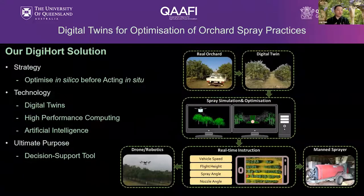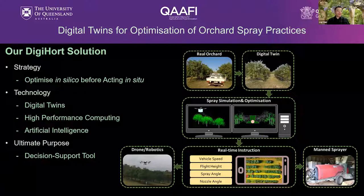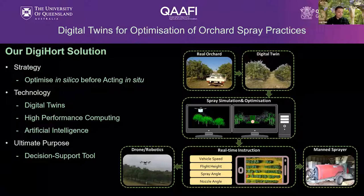In this research, our digital horticulture solution is for exactly such a purpose. It is based on digital twins powered by high-performance computing and artificial intelligence, to optimise in silico — that means to optimise within computer simulations before acting in the real world. Because once growers buy a new machine or sprayer, it might be too late to change their mind. Our ultimate purpose is to develop this into a practical decision support tool that can be easily and widely adopted by growers to create real change.